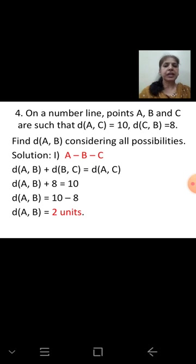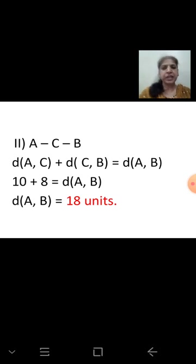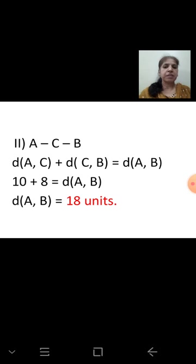Case 2: C lies between A and B, so A–C–B. Then AC + CB = AB, giving 10 + 8 = 18. So distance AB = 18 units.